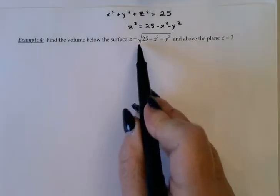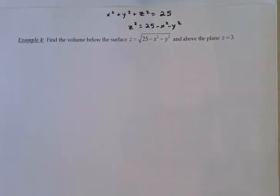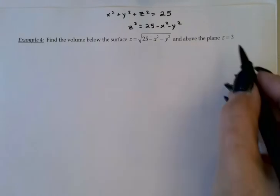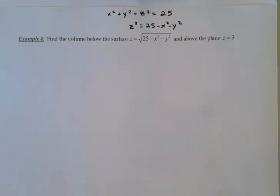And because z was the positive square root, I think I'm going to get the top half of a sphere of radius 5 there. The plane z equals 3 is just a horizontal plane, so I'm thinking this is going to be a hemisphere sliced through by a horizontal plane. Let's check it out.